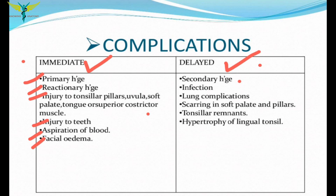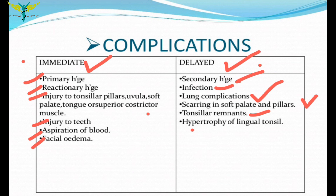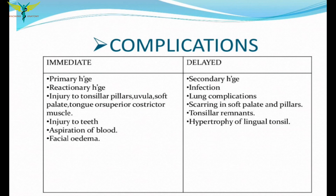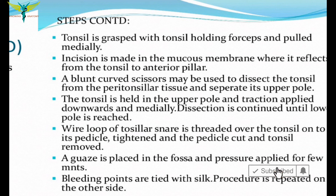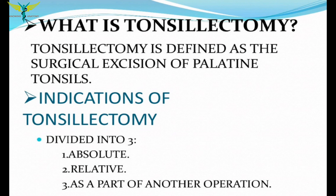Delayed complications include secondary hemorrhage — bleeding occurring after 24 hours, usually due to post-operative infection — lung complications due to aspiration of blood, scarring of the soft palate and tonsillar pillars, recurrent tonsillitis from tonsillar remnants not properly removed, and hypertrophy of the lingual tonsil. This covers the tonsillectomy procedure, focusing on the dissection and snare cold method.